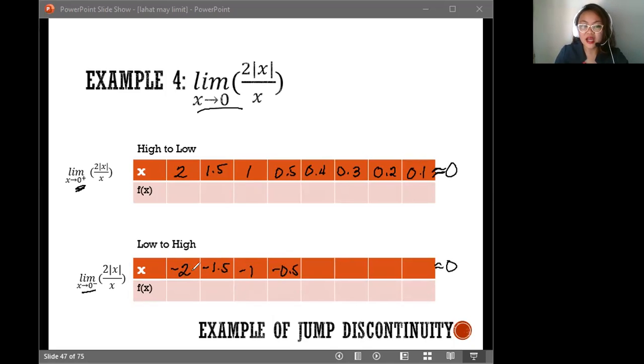Don't get confused. This will not be negative 2.5 because you have to approach 0 when you are indicating the values in your table. Then negative 0.4, 0.3, negative 0.2, and negative 0.1.